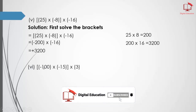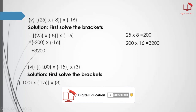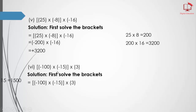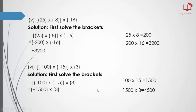Part number 6: first solve the brackets. Now 100 times 15 equals 1500; we write it here, and 3 as it is. Now 1500 times 3 equals 4500; we write 4500 here. So students, this is our Exercise 4.4 completed for today. I hope you understood well; if you have any questions you can ask me and I will answer as soon as possible. Take care, Allah Hafiz.